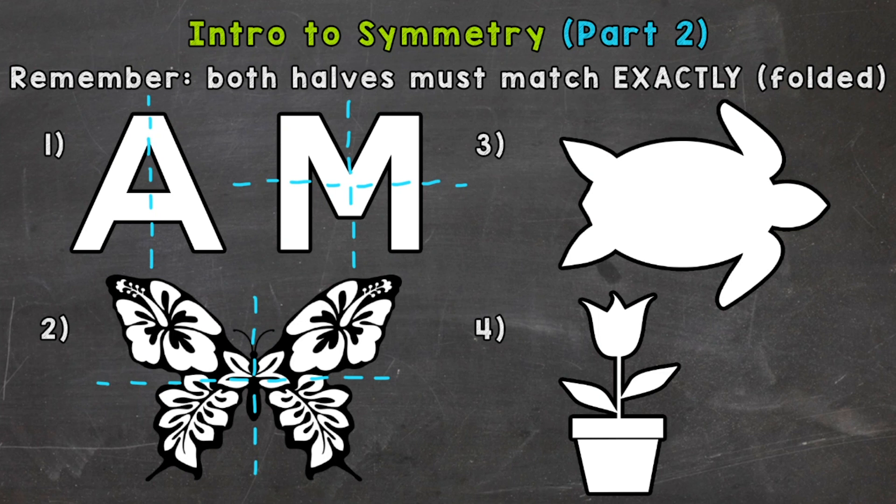So let's move on to number three, where we have an outline of a sea turtle here, and it does have a line of symmetry, and it's going to be horizontal here. And you'll notice if we fold over that line of symmetry, both halves match exactly. So we're good to go as far as number three goes.